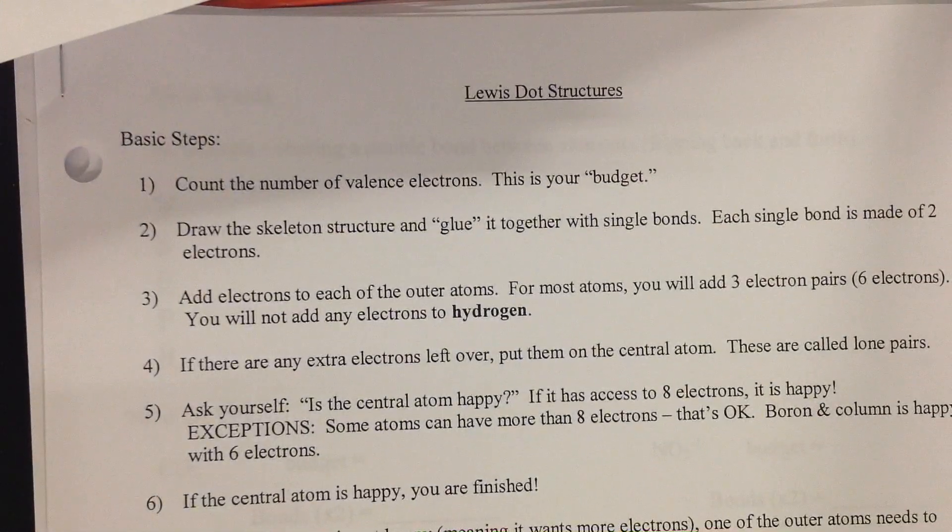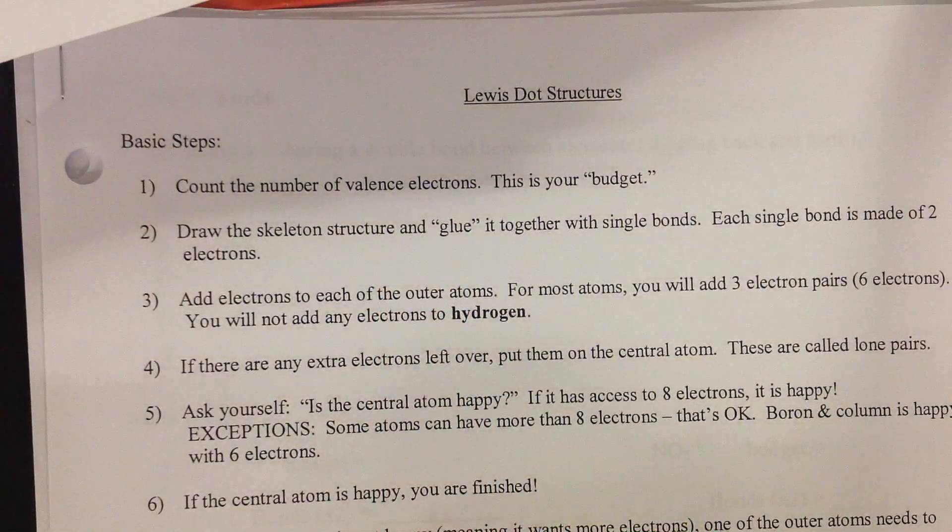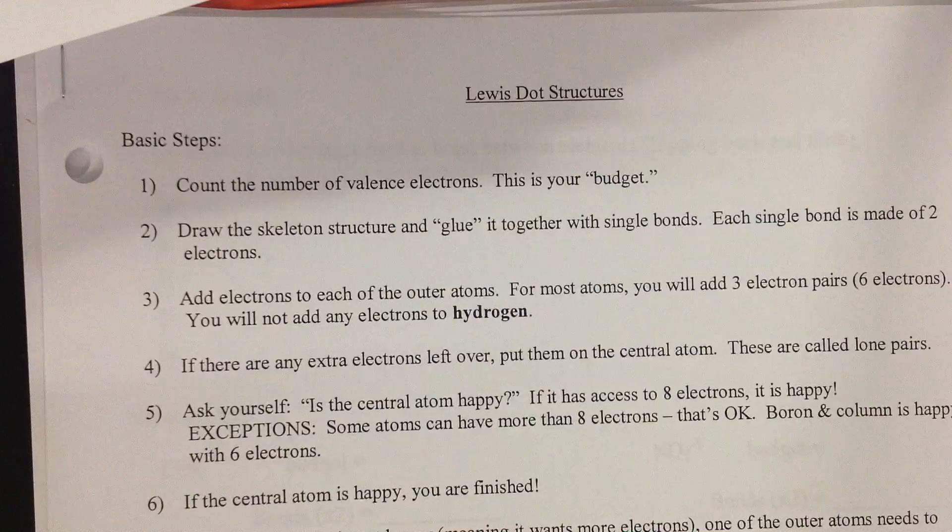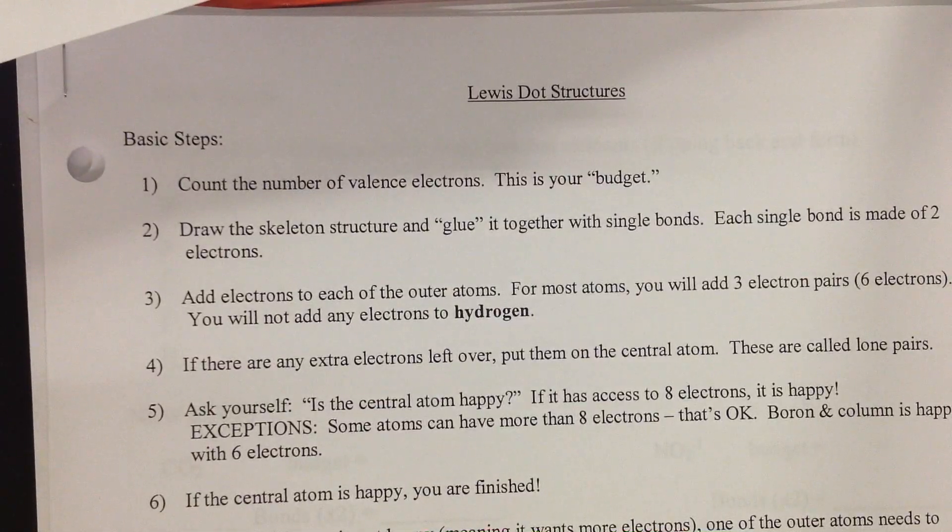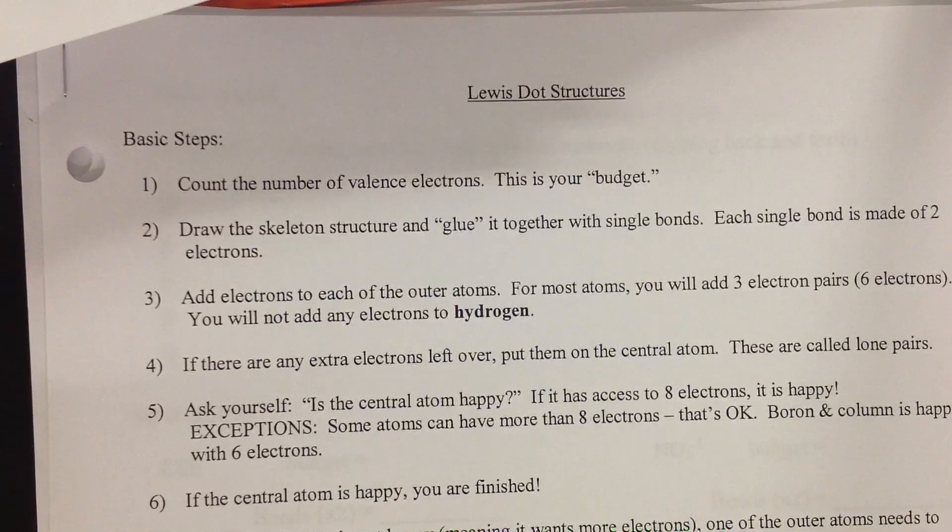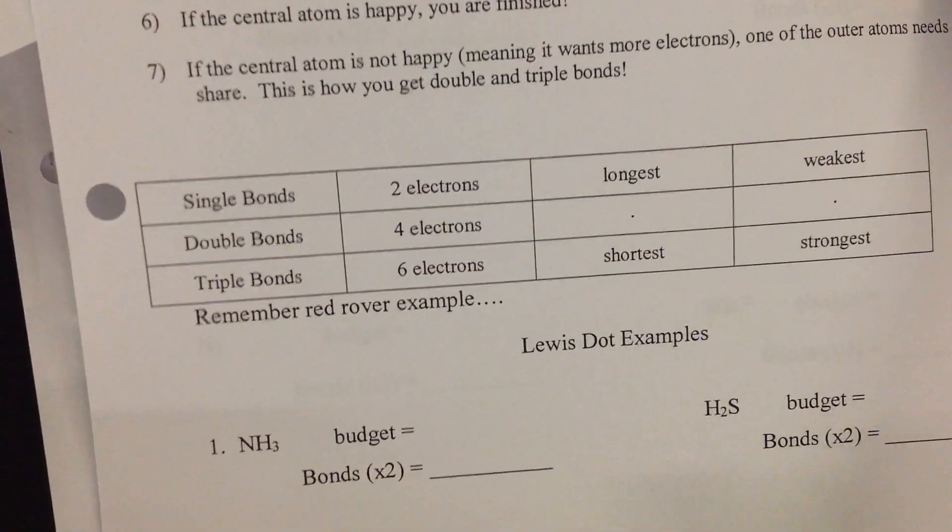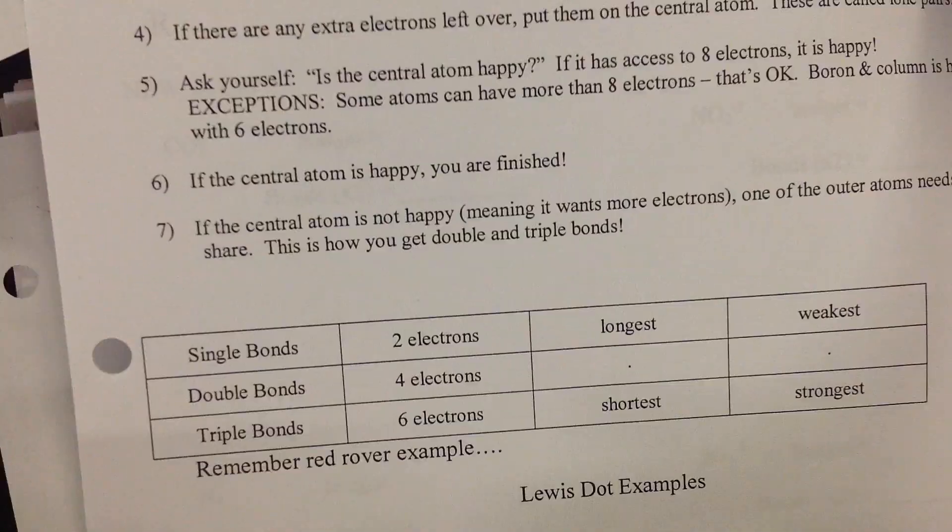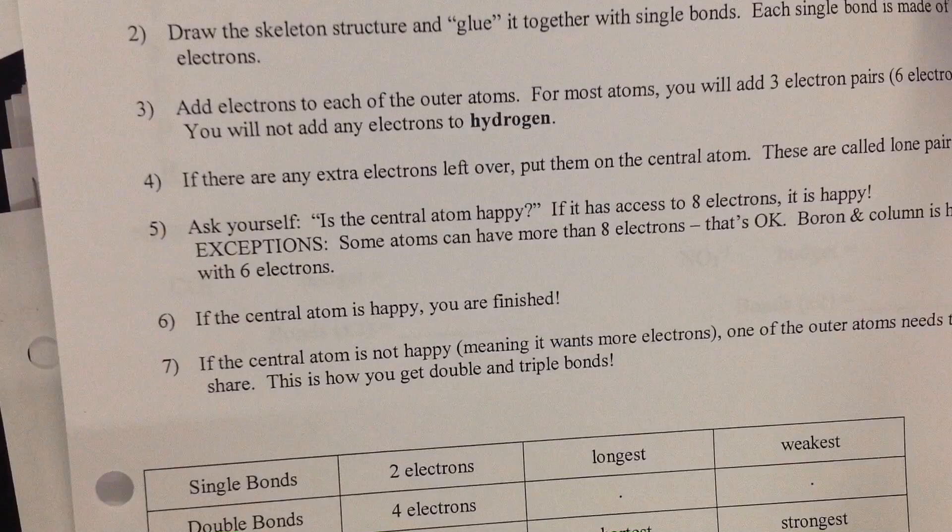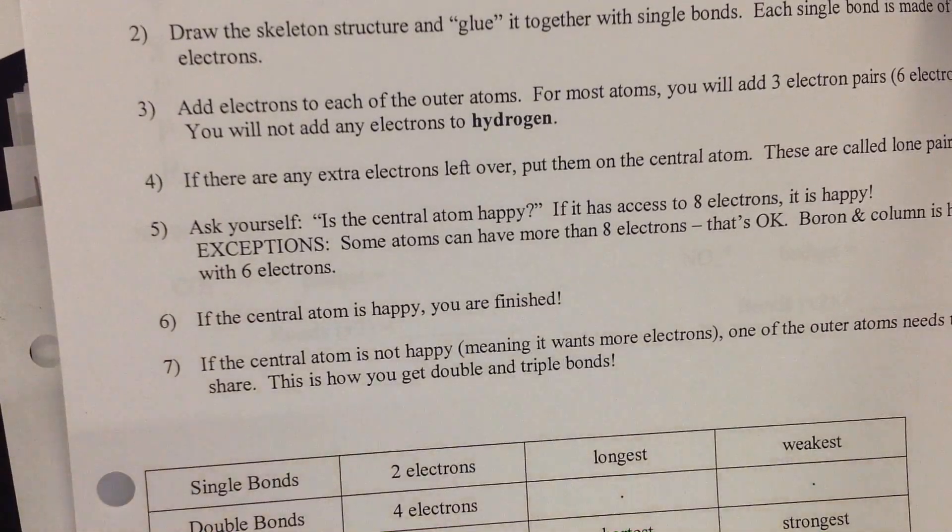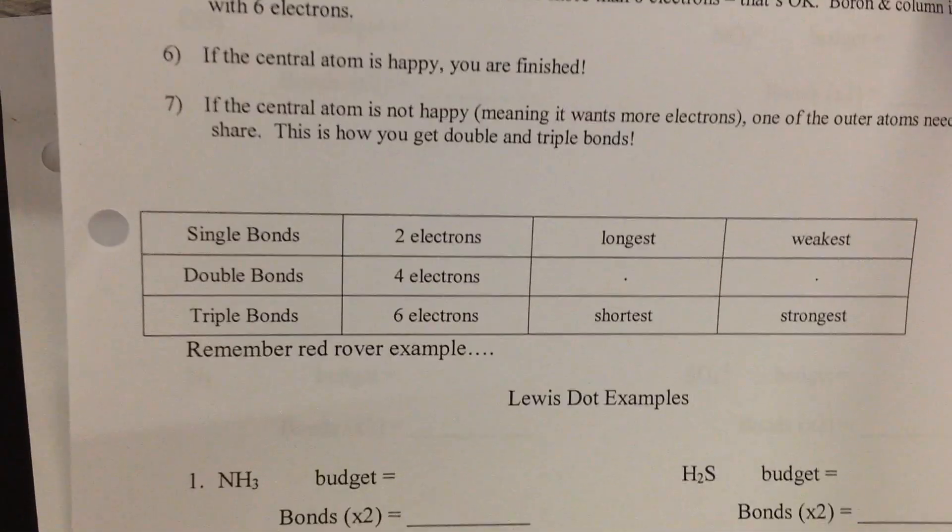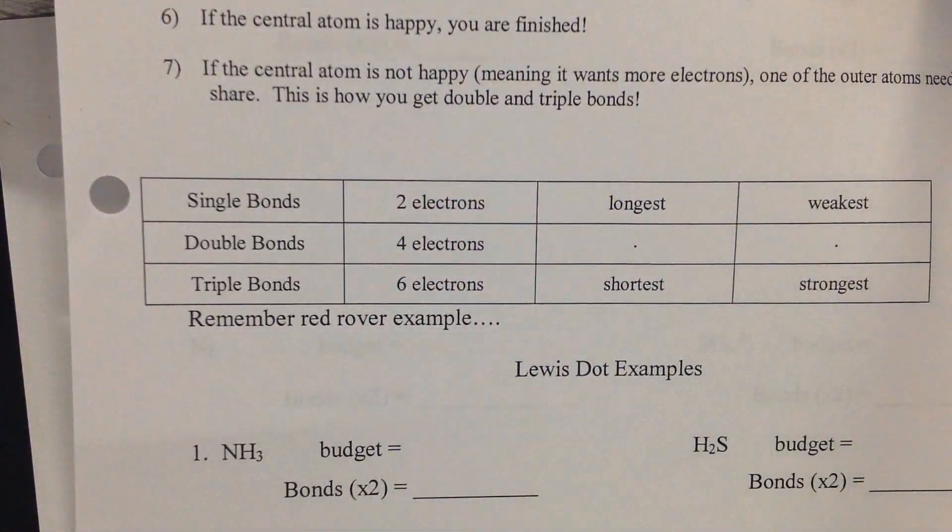So first, let's jump right in. We're going to be using these steps to help us draw out ammonium. Yes, that's ammonia, not ammonium. This is not the polyatomic. So we're going to be looking at NH3, and I'm going to make sure everyone can see that. Now everybody can see. So here's NH3.